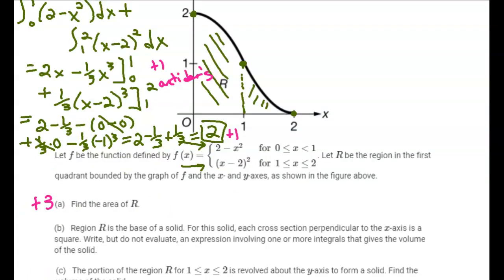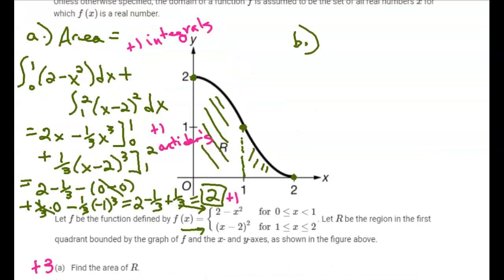Next part of this question is worth two points. Region R is the base of a solid. Imagine that as the base, that curved region there. For this solid, each cross section perpendicular to the x-axis is going to be a square. You have to imagine all of those squares standing up.